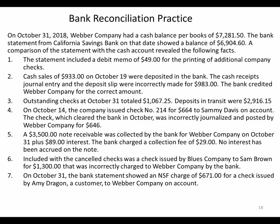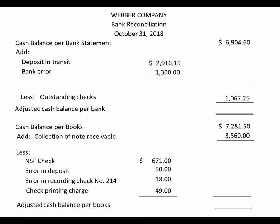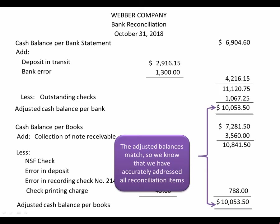Now we've gone through all seven items and addressed every scenario. On our bank reconciliation, we start with the cash balance per bank statement, add in the deposit in transit and the bank error, subtract out the outstanding checks, and we get an adjusted cash balance per bank of $10,053.50. Then we take our cash balance per books, add in the note receivable, subtract out the errors, the NSF check, and the check printing charge, and we also arrive at an adjusted cash balance per books of $10,053.50. Since both numbers match, we know we did our bank reconciliation correctly.